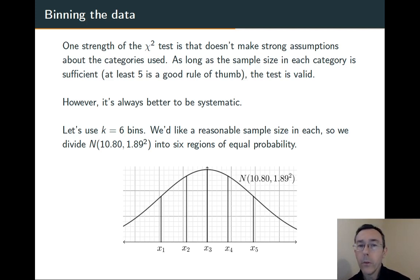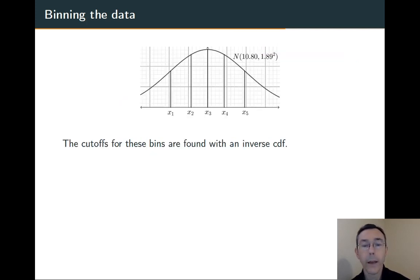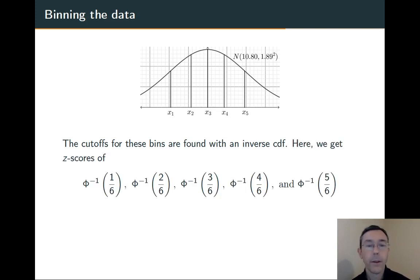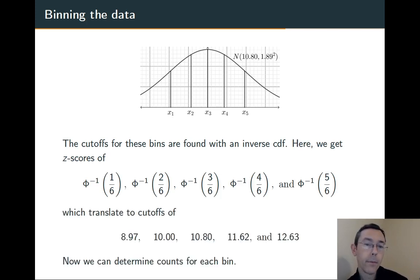So what we're going to do is we're going to take the distribution that we're assuming under the null hypothesis, N(10.80, 1.89²), and divide it into six regions of equal probability. So the way we're going to do that is with the inverse CDF. We know that the area to the left of x₁ here is supposed to be 1/6. The area to the left of x₂ is 2/6 and so on. So we get these z-scores that are then going to translate into actual cutoffs in terms of our random variable x. Here they are.